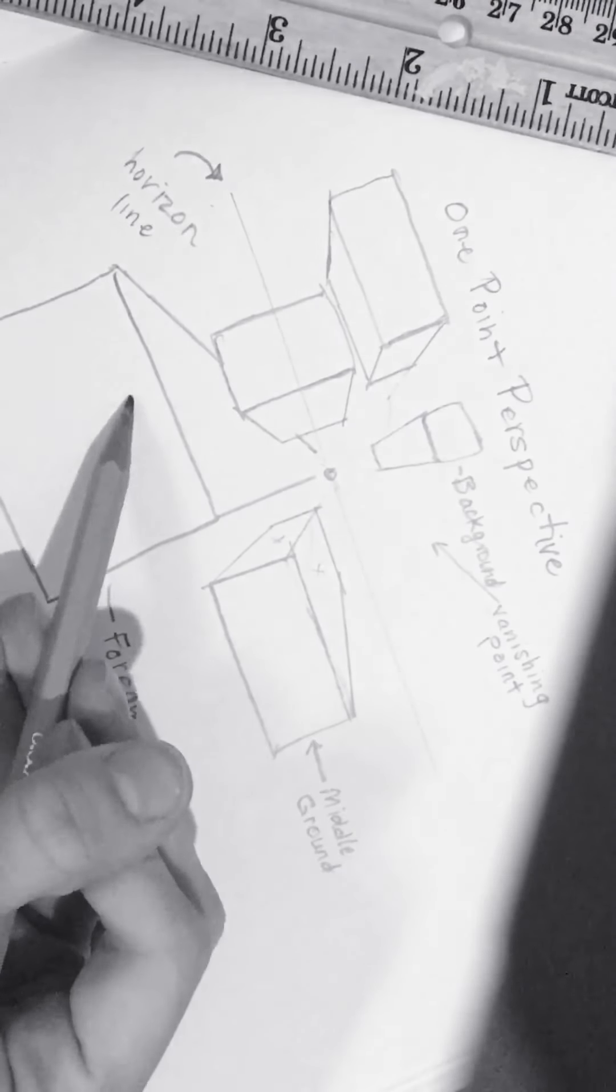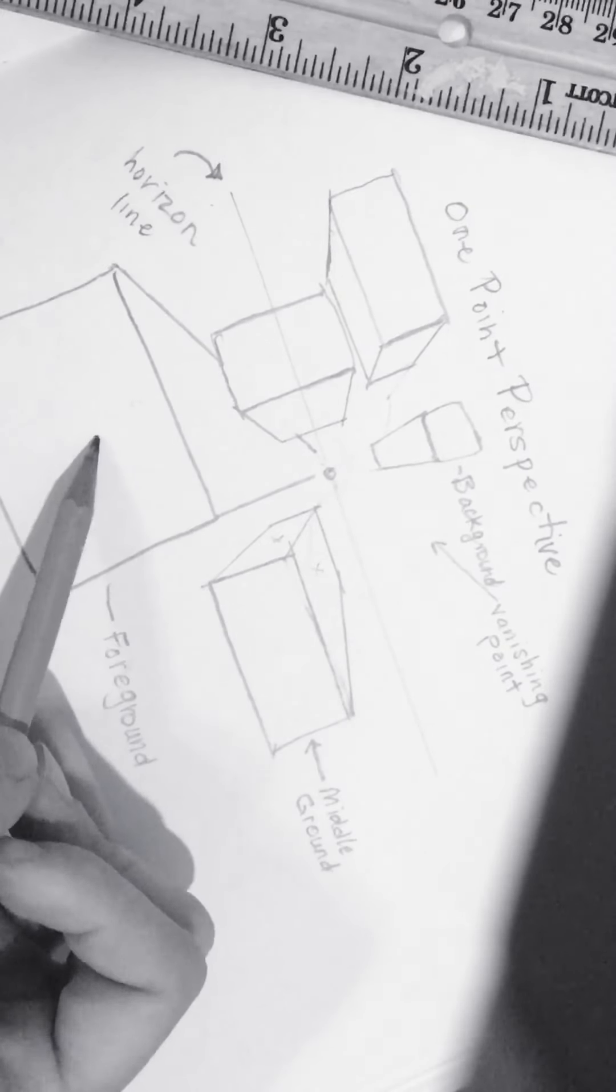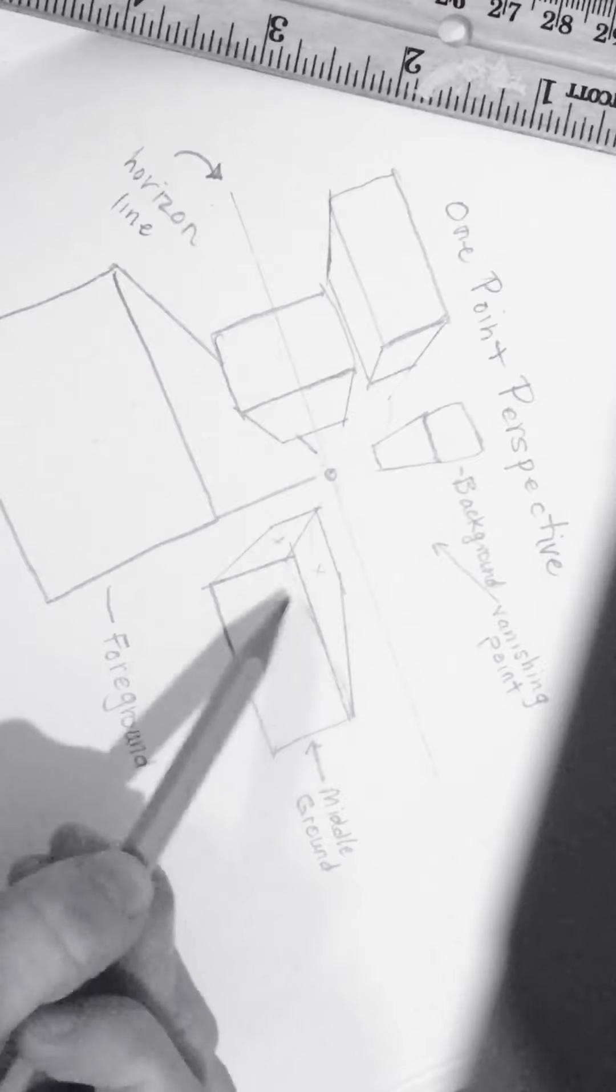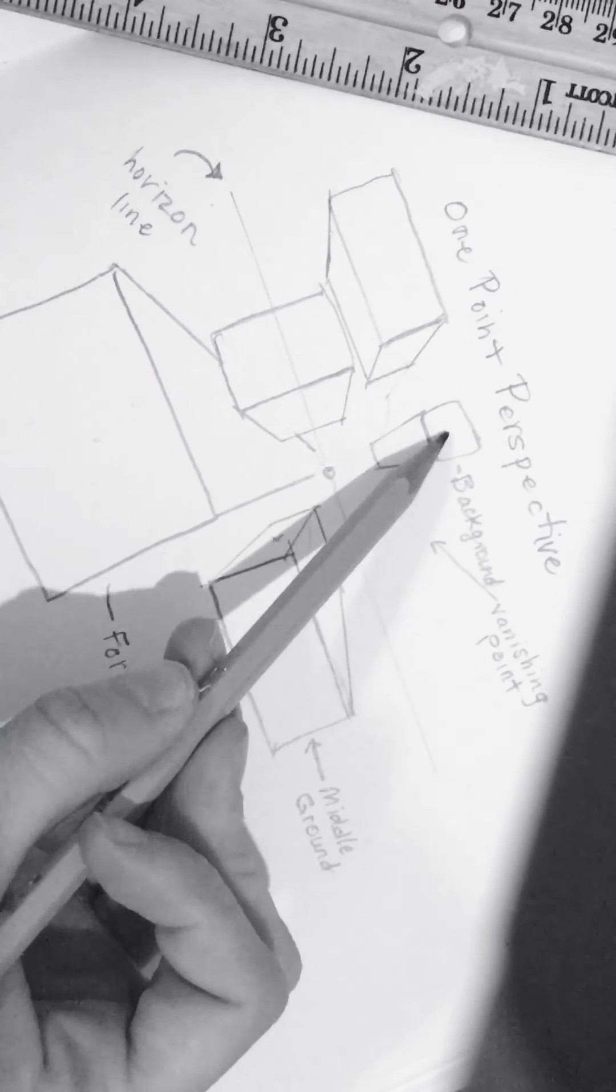And then whatever is left in between is going to be my middle ground. So this, since it is the largest shape, is the closest thing to me. This is a little bit further away, but not too far. And this is way far away.